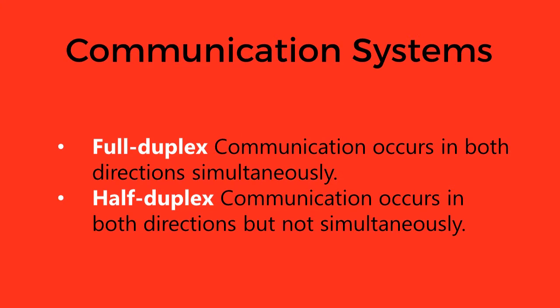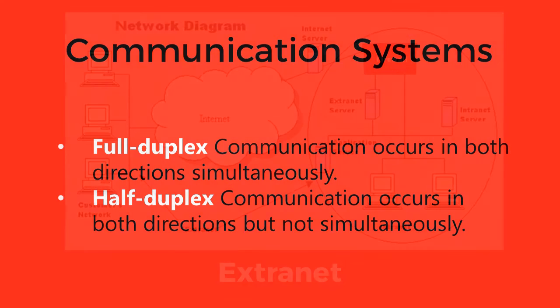A half duplex communication system allows communication in both directions but not at the same time. Handheld radios use this communication system.